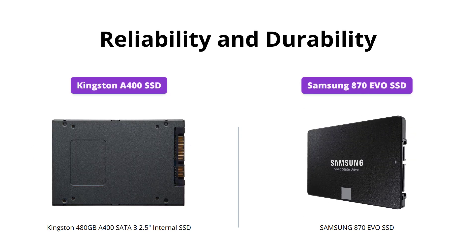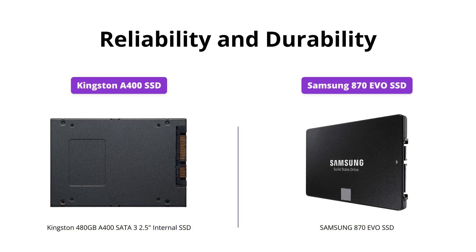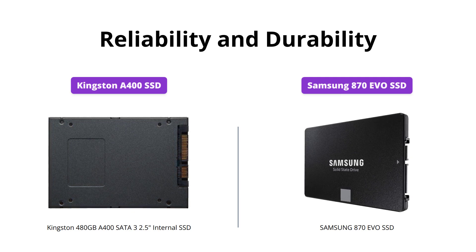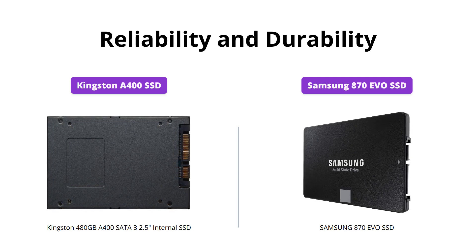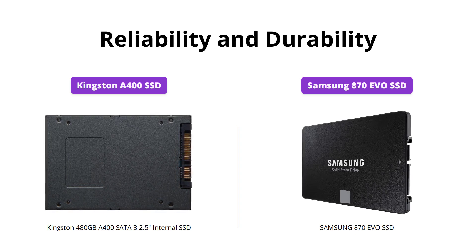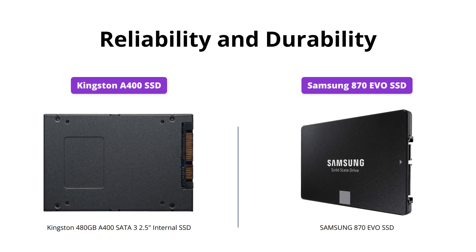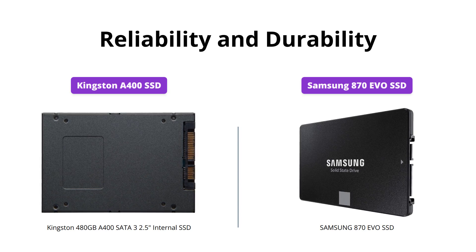Both SSDs are more reliable and durable than hard drives, which makes them a great choice for any user. Samsung 870 EVO SSD has an industry-defining reliability with up to 2,400 TBW, while Kingston A400 SSD has no specified TBW.